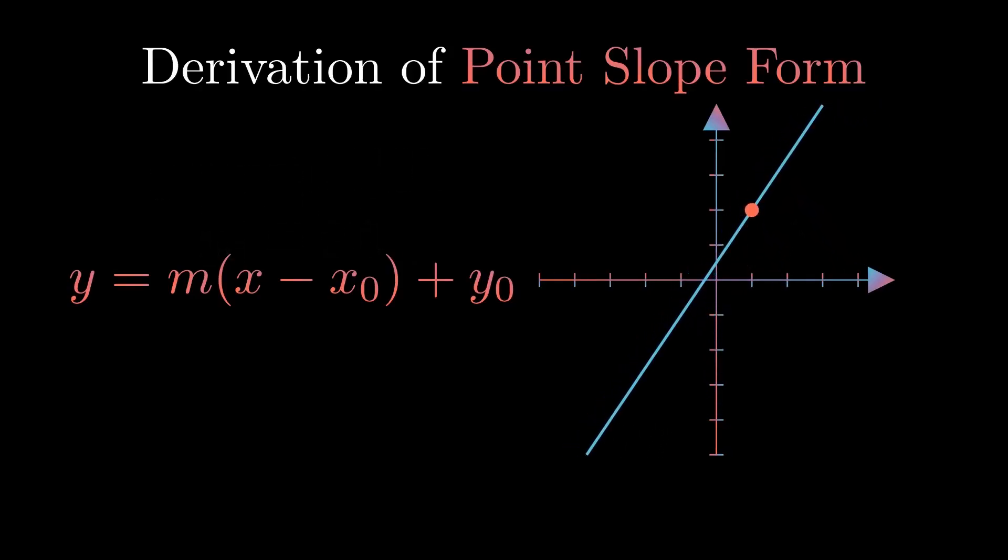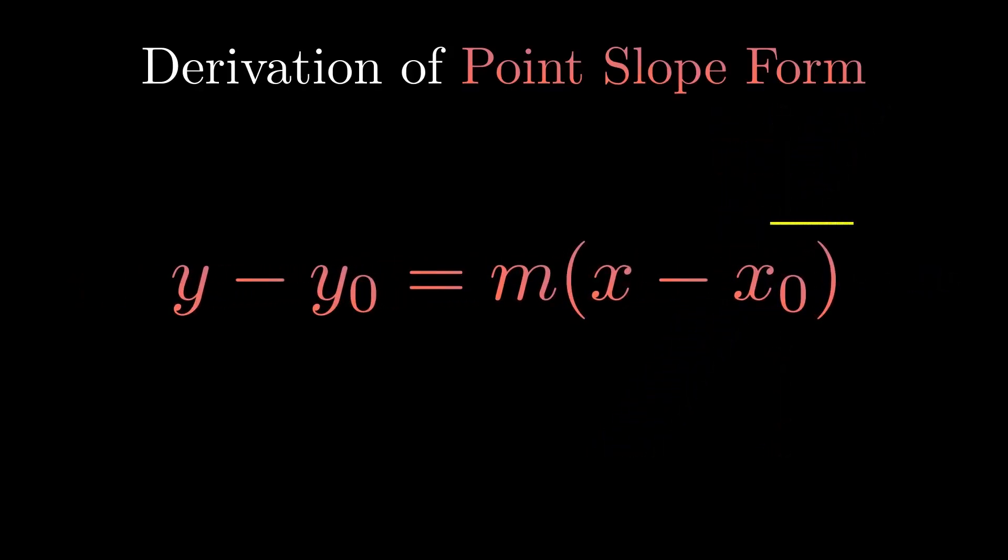Now it goes through the point (x0, y0) with the slope of m. Doing some rearranging, and there you have it, the point-slope form of a line.